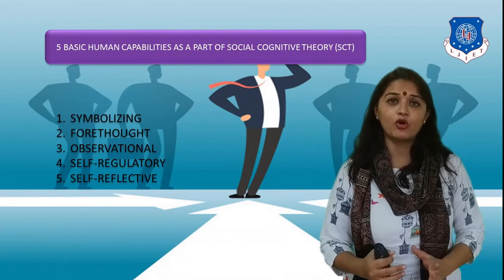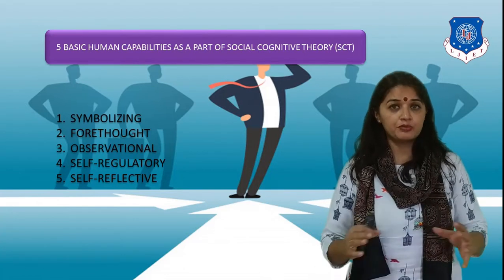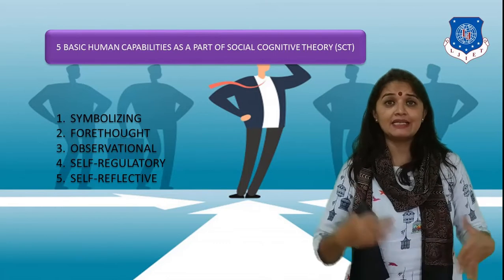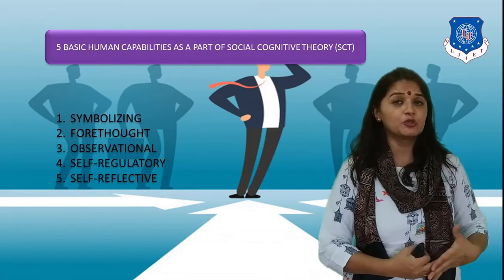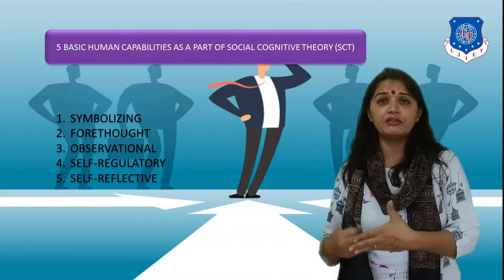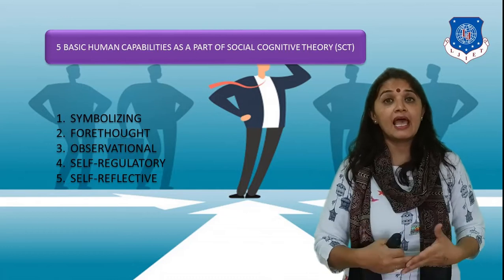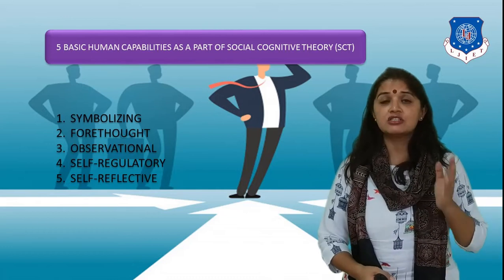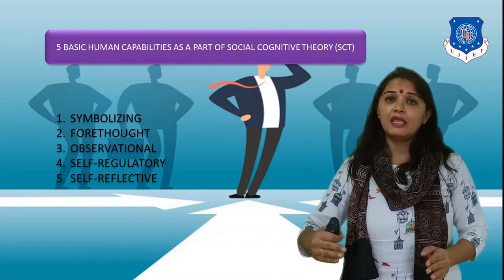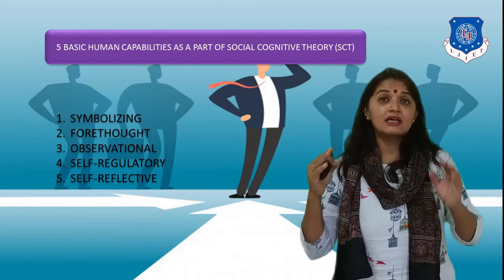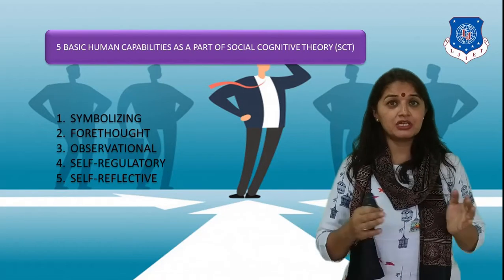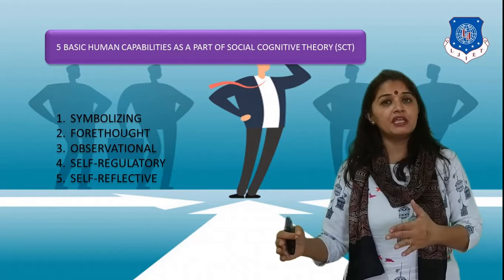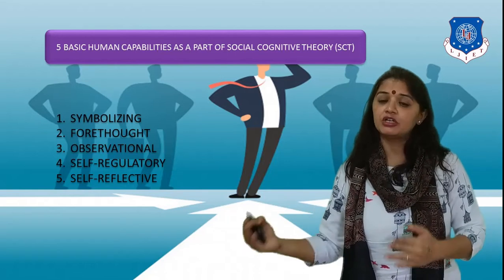The third capability is observational. Every employee observes from the surrounding — from their families, relatives, peer group, superiors, and subordinates — and from that they learn what kinds of actions or behaviors will make them successful. This is why observational capability also influences the behavior or action of a human being.